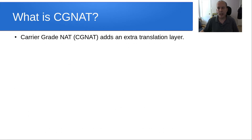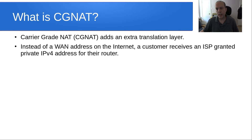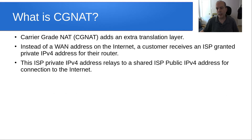What exactly is CGNAT? Carrier-grade NAT adds an extra translation layer. It's a little bit like double NAT where you have a router behind a router. Instead of a WAN address on the internet, a customer receives an ISP-granted private IPv4 address for their router. This ISP private IPv4 address relays to a shared ISP public IPv4 address for connection to the internet. So multiple customers in a CGNAT share the same public address on the internet.